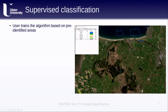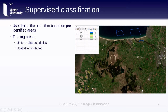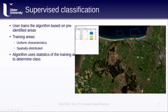In supervised classification, we train the algorithm using pre-identified areas. These training areas should have uniform characteristics. The larger the spread of pixel values included in a training class, the harder it is to have a clean separation between the different classes. We also want them to be spatially distributed throughout the scene as much as possible, to help counteract any potential differences in illumination across the image. The computer then uses the data contained within the training samples to determine which class each pixel belongs to, depending on the algorithm used.